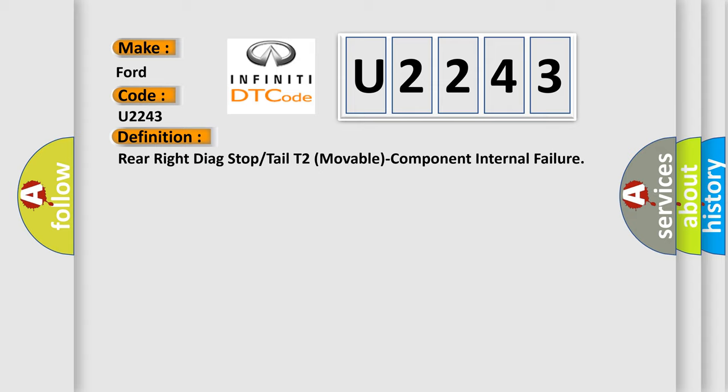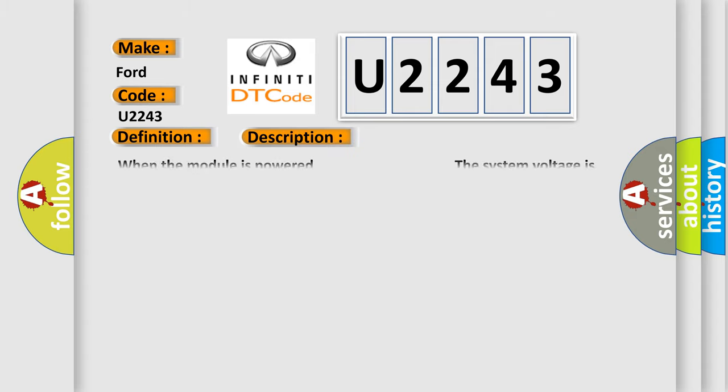And now this is a short description of this DTC code: When the module is powered, the system voltage is greater than 9.0 volts and less than 16.0 volts.